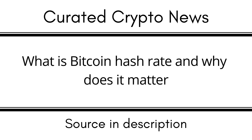As a result, the hash rate rises as the difficulty of the Bitcoin network does. Similarly, the hash rate is a crucial indicator for cryptocurrency investors of how secure a cryptocurrency's proof-of-work (PoW) network may be against hackers. Network attacks become more expensive and challenging as the hash rate increases.